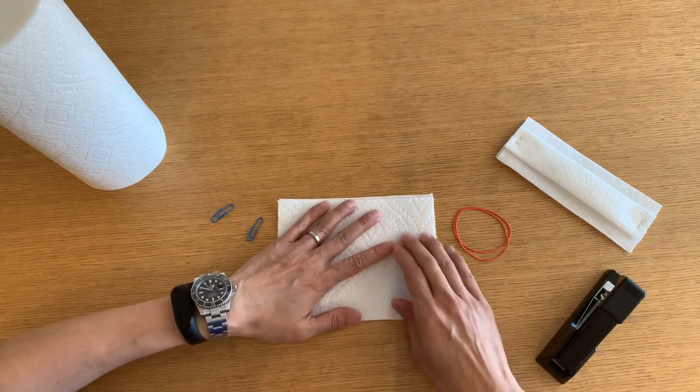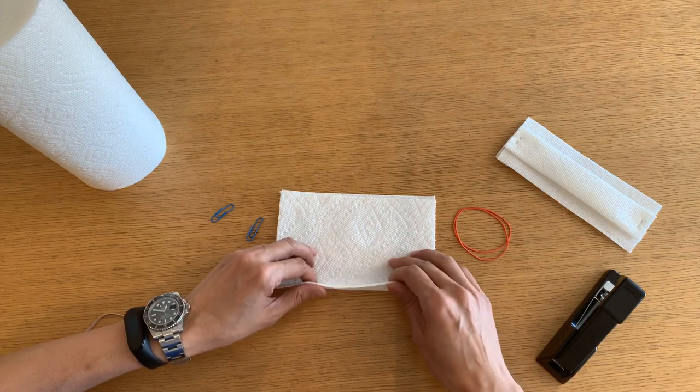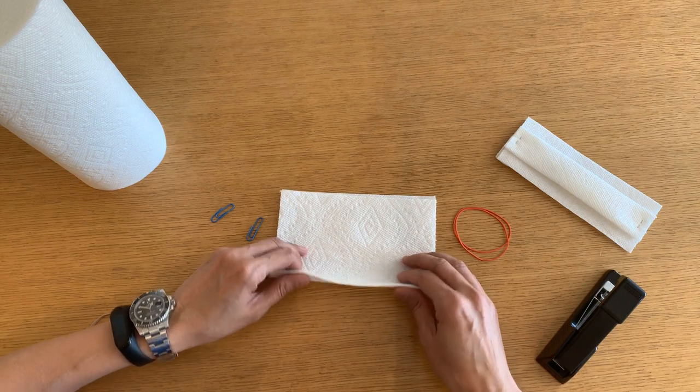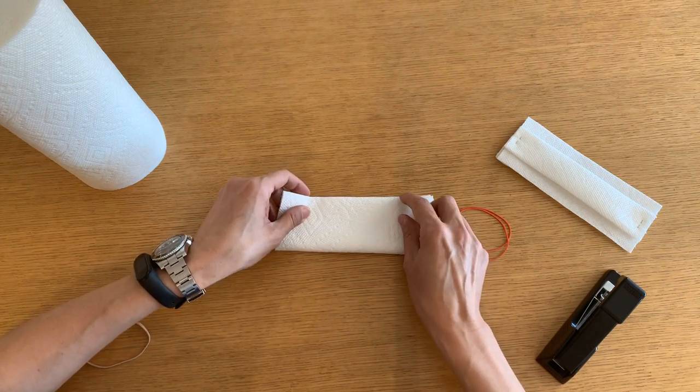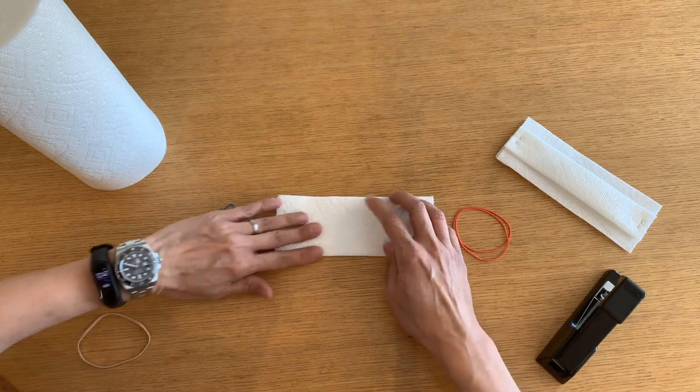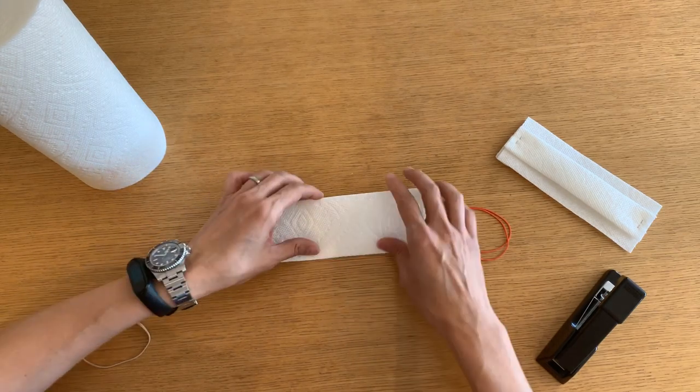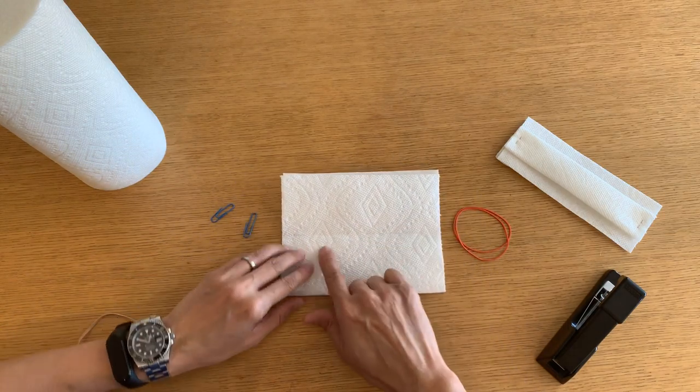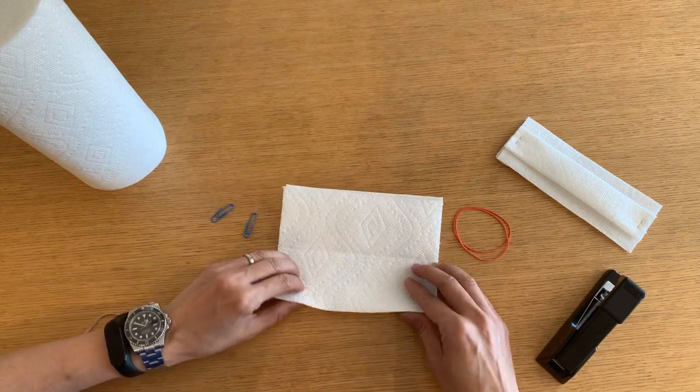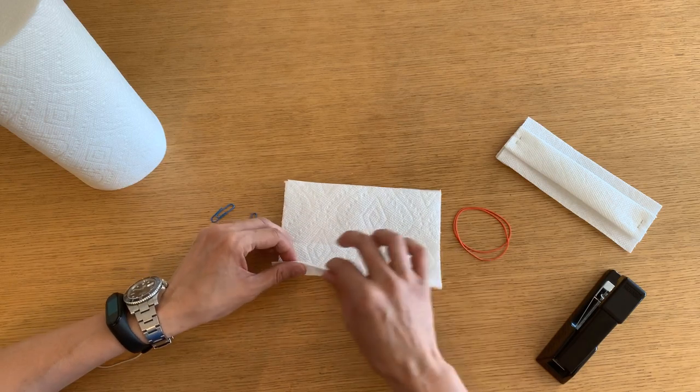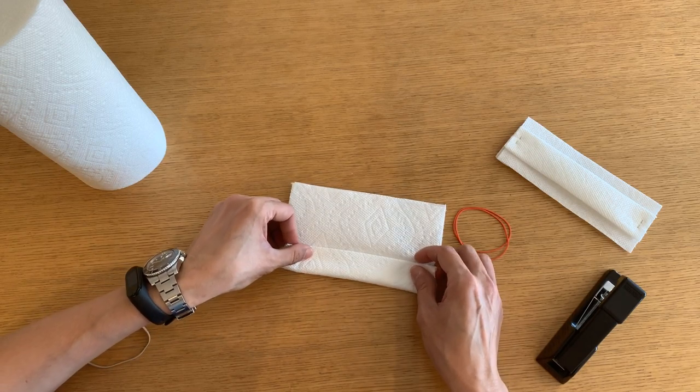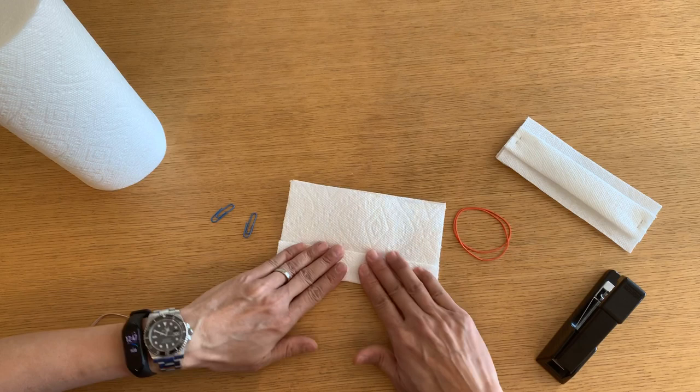Then you're going to fold it in half. So you're going to fold it in half right here. This one just do lightly so you can figure out where the middle of the paper towel is, or your mask. So you can hopefully see there's a slight crease right there.